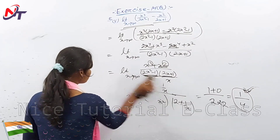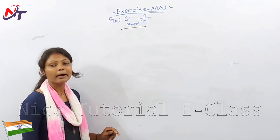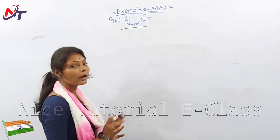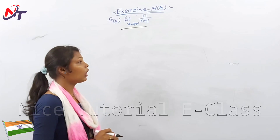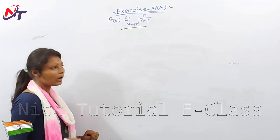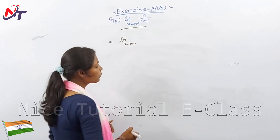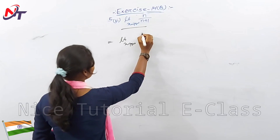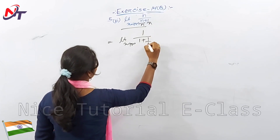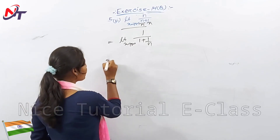Next is question B: limit n tends to infinity of n/(n plus 1). What do we do? We find the highest power. The highest power in the numerator is 1 (n¹), and in the denominator also 1. So we divide both numerator and denominator by n. That gives: n/n = 1 divided by (n/n plus 1/n) = 1 divided by (1 plus 1/n).